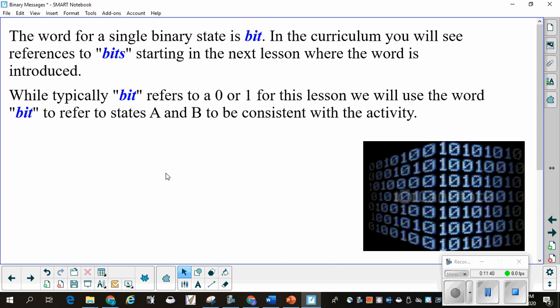The word for a single binary state is bit. In the curriculum, you will see the references to bits starting in the next lesson where the word is introduced. While typically, bit refers to a zero or one, for this particular lesson, we're going to use the word bit to refer to states A and B to be consistent with the activity.